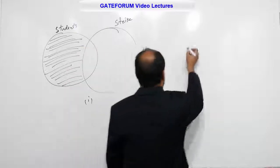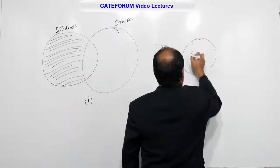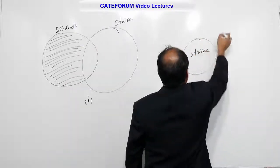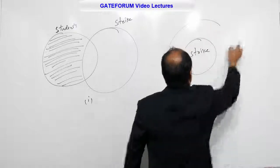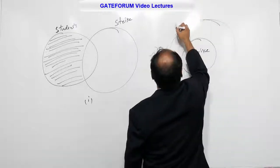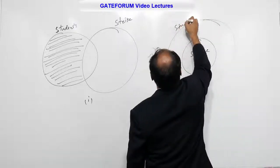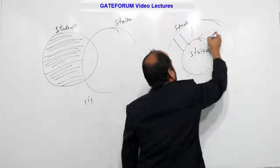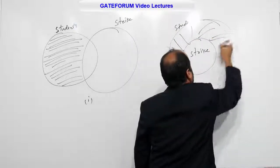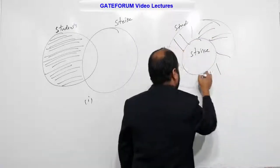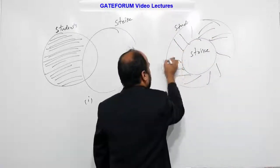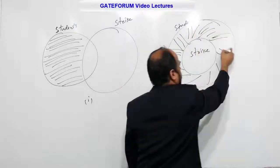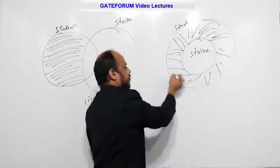The second Venn diagram: this portion represents the strike, and this portion represents students. The region between the two circles represents students who were not involved in the strike. This is another possible Venn diagram.